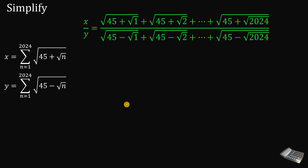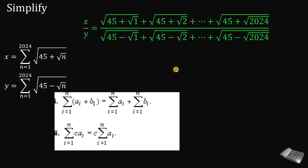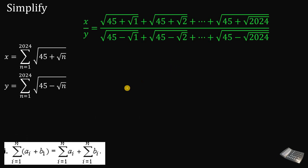Let's recall some properties of summation. The first one: the summation of (a_i plus b_i) from i equals 1 to n is equal to the summation of a_i from i equals 1 to n, plus the summation of b_i from i equals 1 to n. In this question, we will use this first identity.